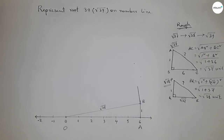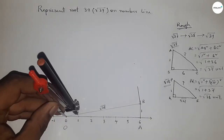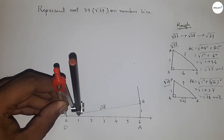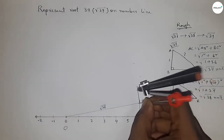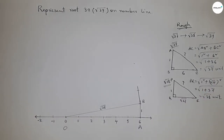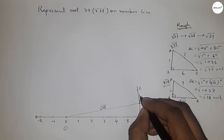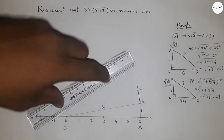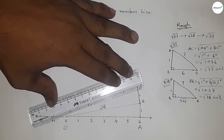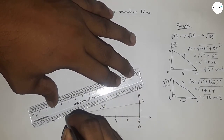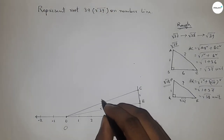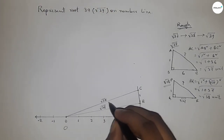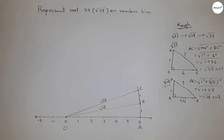Applying this concept here: we already drew a perpendicular line, so take one unit length and mark point C. This is 1 unit length. Join O and C — this length OC is root 38 units.